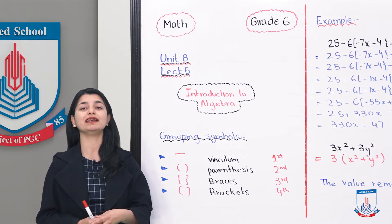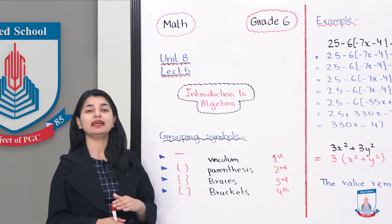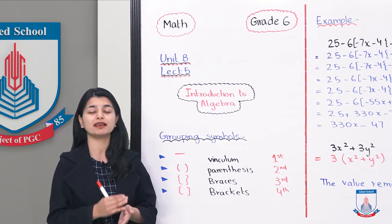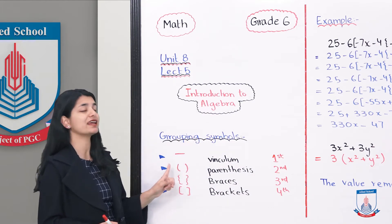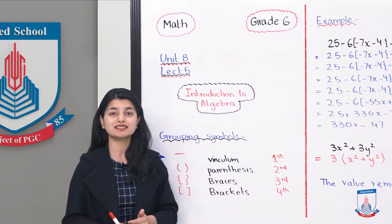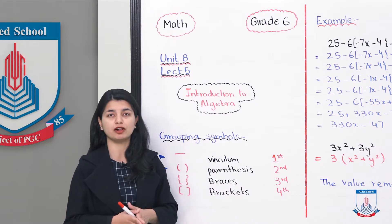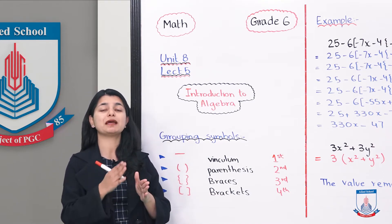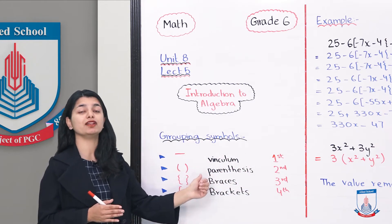We will first understand our grouping symbols which are used in our simplification process. First is the vinculum, which is the dash written on the numbers — this means you have to simplify that whole portion first. Second is the round brackets which we call parentheses. Third are the curly brackets, whose actual name is braces. And finally, if you have square brackets, which we call simple brackets, you address them last. You have to go step by step: first, then second, then third, then fourth.